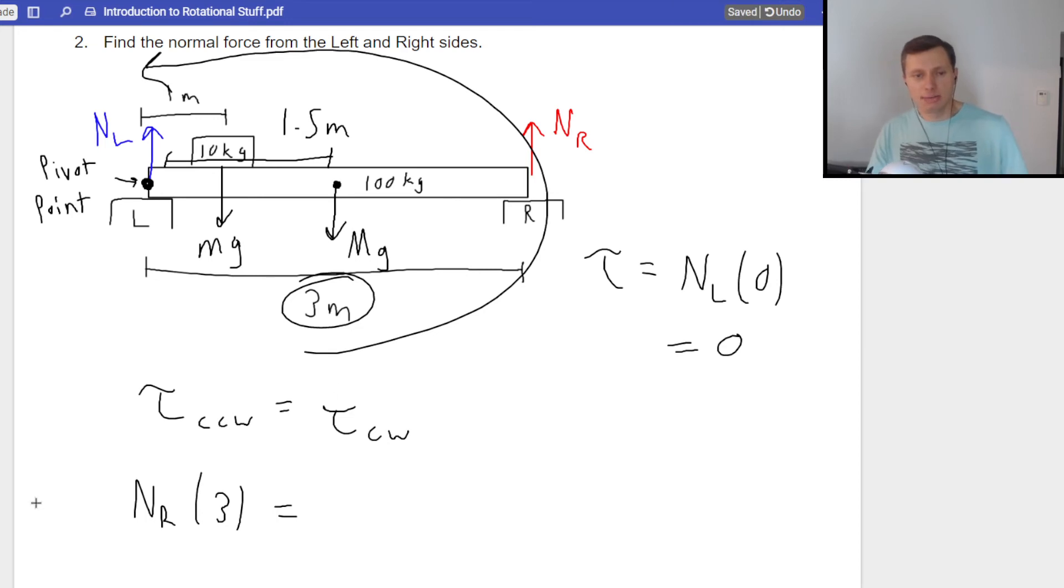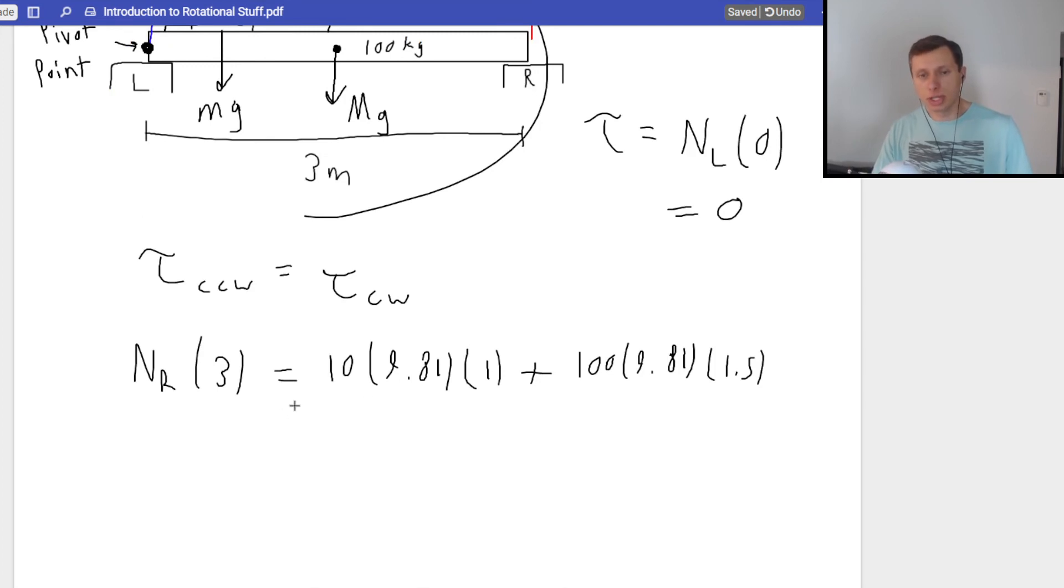Okay. Now on the other side, I have lowercase MG, which is lowercase M is 10 kilograms. G is still 9.81. And that distance, what's the distance from the pivot point? It's kind of hard to see. It's kind of hidden, but I said it was one meter. That 10 kilogram mass is one meter away from the left side. So just times one plus my torque from the hundred kilogram mass. That's going to be a mass of 100 times G, which is 9.81 times its distance, which is 1.5 meters. There we go. And it's 1.5 meters because again, it's located exactly halfway in between. That center of mass is exactly halfway in between the bar. So now we have all our numbers.